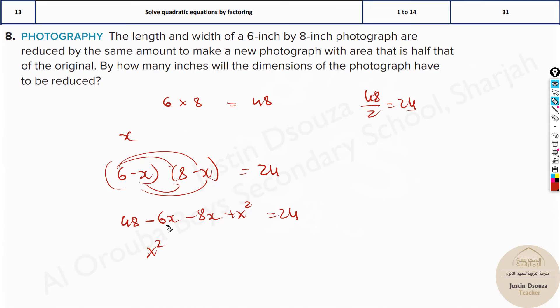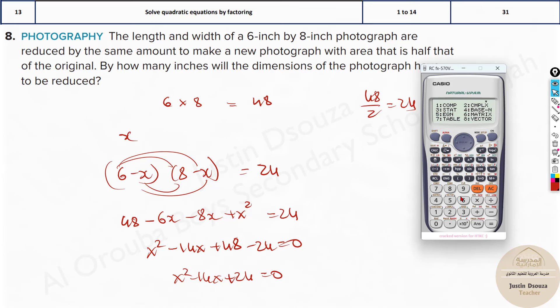Let's rearrange this. It will be x squared minus 14x plus 48 minus 24 equals 0. So x squared minus 14x plus 24 equals 0. Use the calculator: mode 5 and 3, and the coefficients are 1, minus 14, and 24. The answer is 12 and 2.